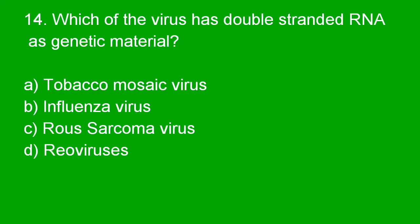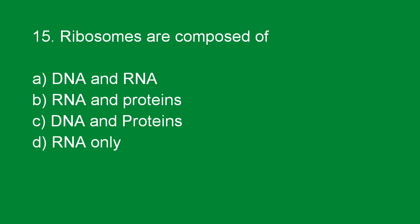Next question: Which virus has double-stranded RNA as genetic material? Reovirus has double-stranded RNA as genetic material. Option D is right. Ribosomes are composed of RNA and proteins. Option B is right.